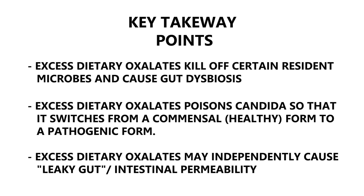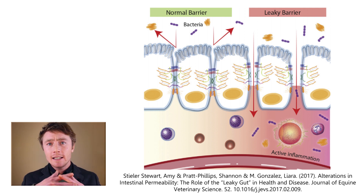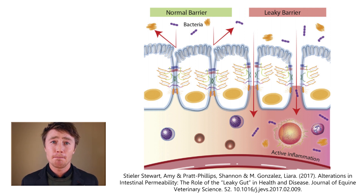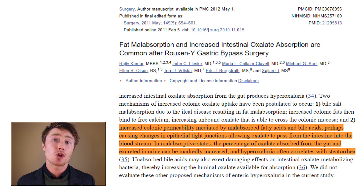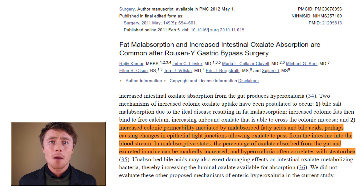Oxalate can also disrupt the tight junction barrier in the kidney through similar mechanisms as what might happen in the gut, and it's possible that oxalate may cause leaky gut due to that. For those people who have leaky gut — technically referred to as intestinal permeability — a state where the lining of the gut wall is actually more permeable than normal and allows various things into the bloodstream from the gut that shouldn't be there. If someone has this condition, they are actually much more likely and much more susceptible to absorbing elevated levels of oxalate. Research shows that if someone has intestinal permeability and fat malabsorption, this increases the rate of oxalate absorption by a great degree.